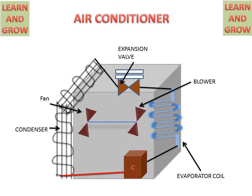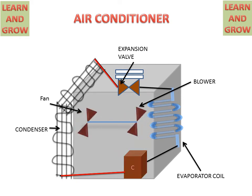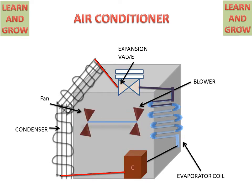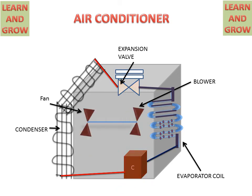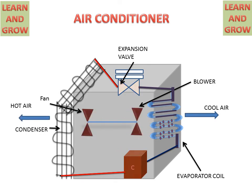This high pressure liquid then goes to the expansion valve, where it is cooled and converted into low pressure liquid. This low pressure liquid goes to the evaporator, where it converts back into vapour and absorbs heat from that space. Cold air comes out from the evaporator coil side, and hot air is expelled outside to the atmosphere. The refrigerant then cycles back to the compressor.